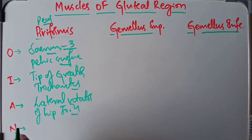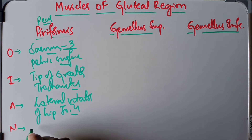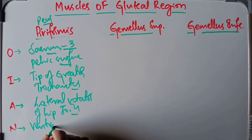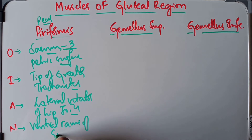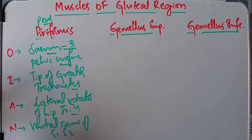The nerve supply of the piriformis is by the ventral rami of S1 and S2.